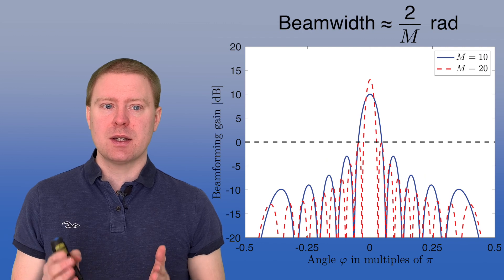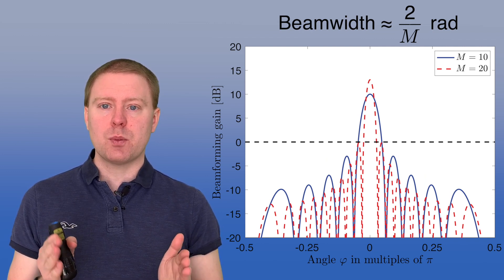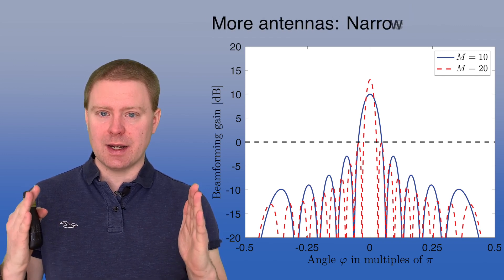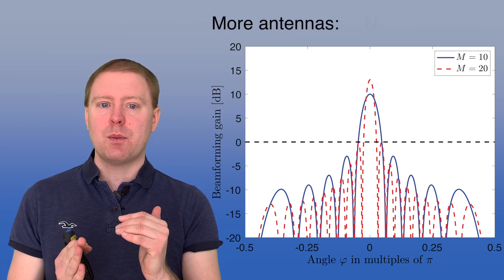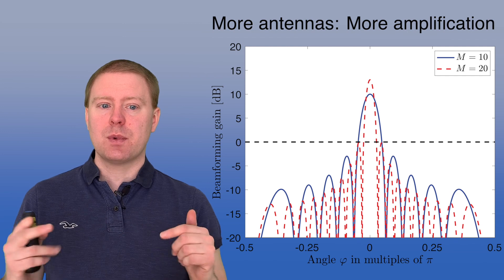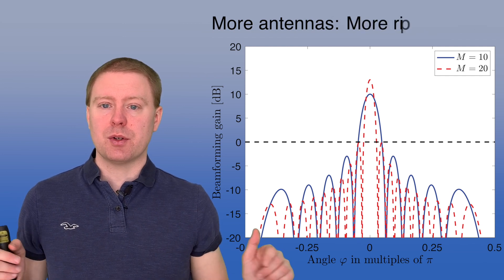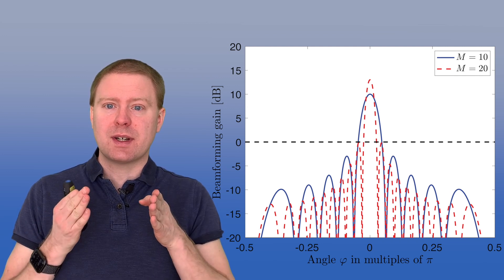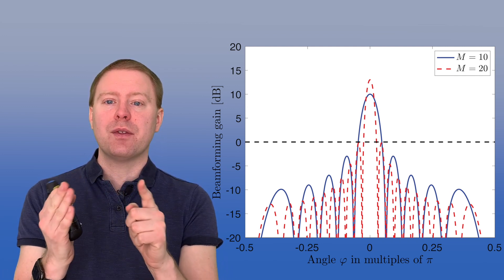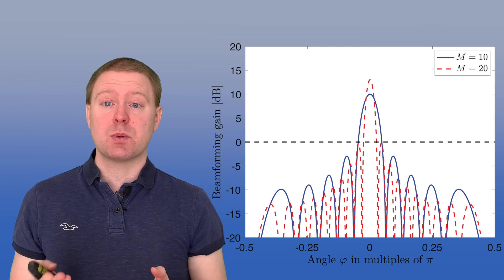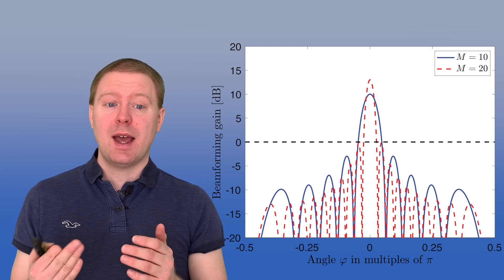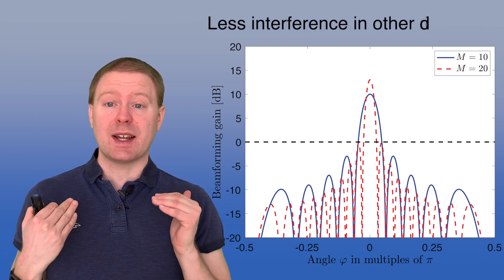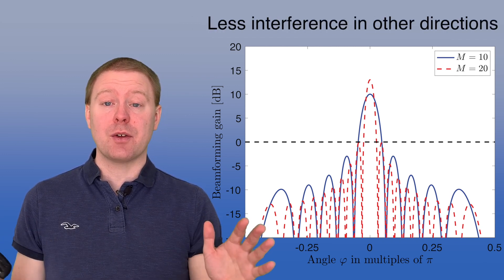As an example, going from the blue curve with 10 antennas to the red curve with 20 antennas, we get a narrower main beam, more amplification, and more ripples on the sides. This is what beamforming does — it directs the signal more and more in a particular angular direction. Around it there are some directions that also get amplification, but in general less interference spreads out in other directions.